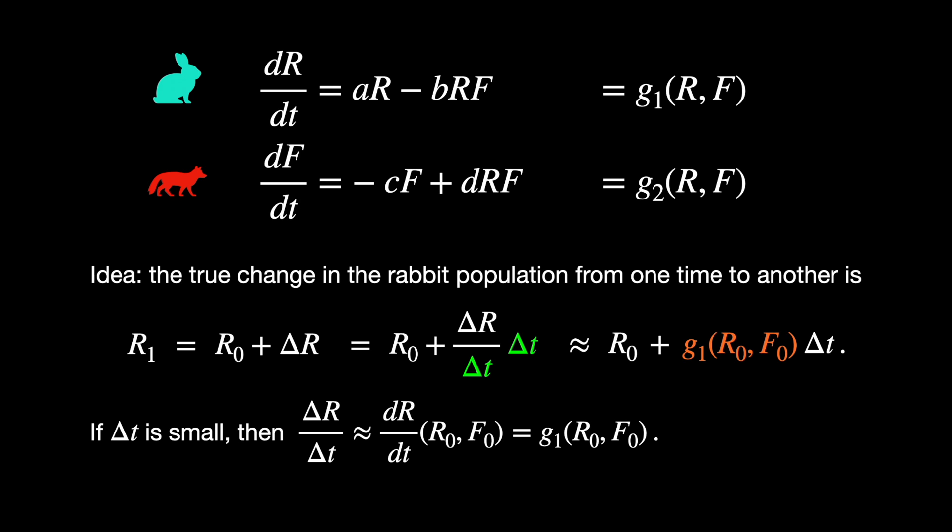Check your understanding to see if you can write down the approximation for the foxes. What you should find is that the new fox population is approximately the old fox population plus G2 measured at the old populations times the time step.